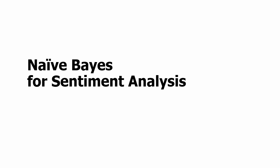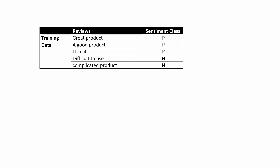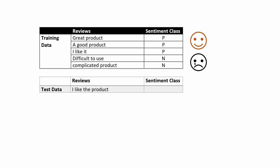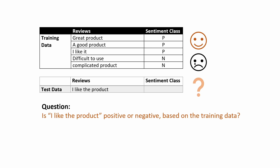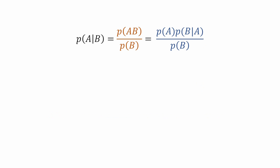In this tutorial I'm going to explain the concept of Naïve Bayes for sentiment analysis. This is the training data — it has sentences where 'great product' can be considered politics sentiment, 'difficult to use' can be considered negative. The question is: if we have a new sentence like 'I like the product,' how can we classify it as political or negative based on the training data?